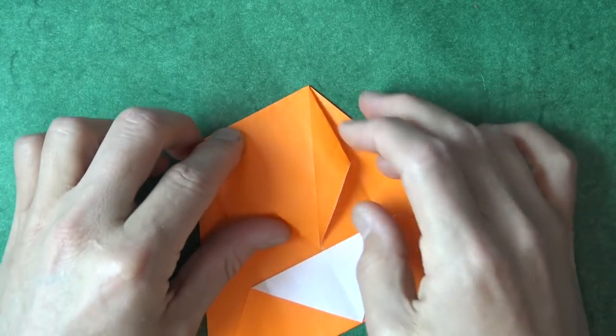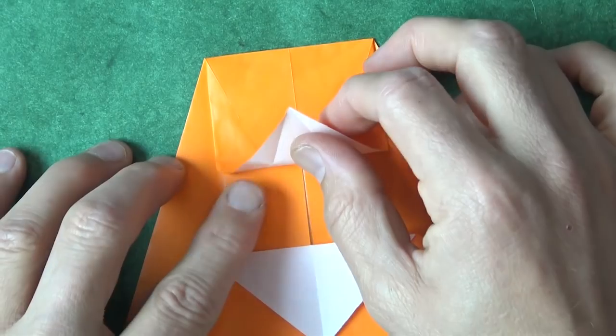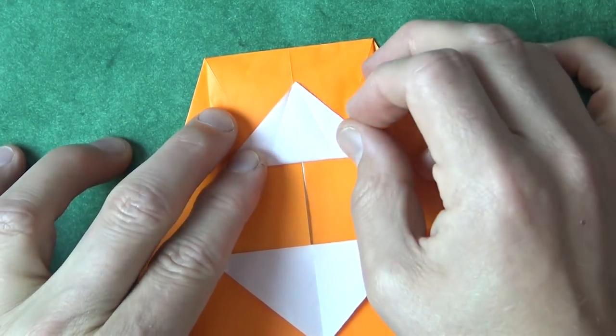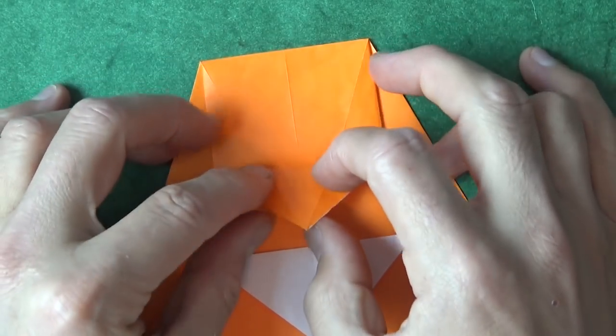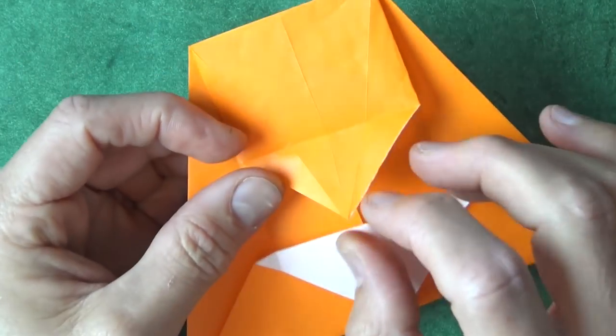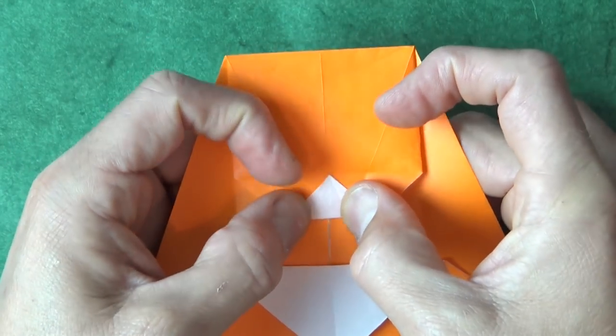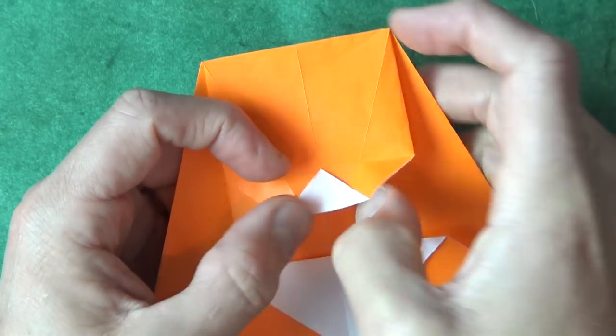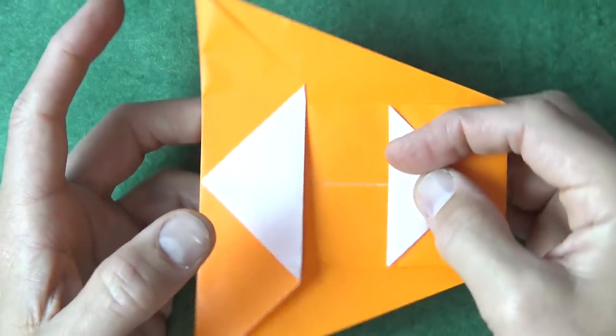Now rotate, and fold this flap up on these two points. And unfold, and fold the corner to the intersection. And fold it up again. Rotate.